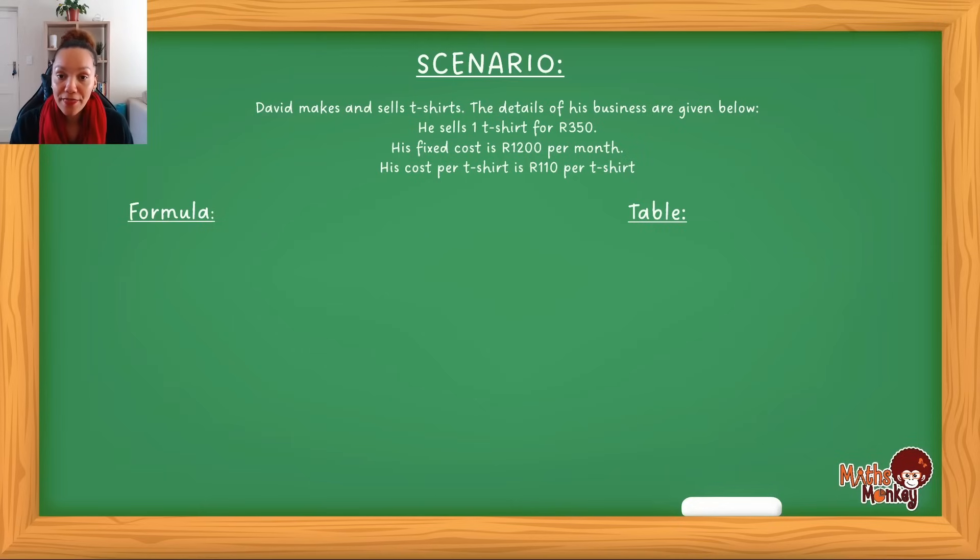His fixed cost is 1,200 rand per month. Now fixed costs just means that what does he have to pay regardless of what's happening in the company? So if he's paying rent for a little room to make these t-shirts, then that means that regardless of whether he's making the t-shirts or not, that rent is still due and that rent has got nothing to do with how much. That's got nothing to do with the actual product. So that would mean that his fixed cost would be 1,200. That remains constant regardless of how much he sells or how much he makes.